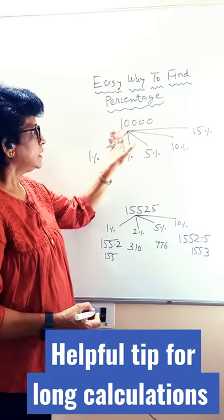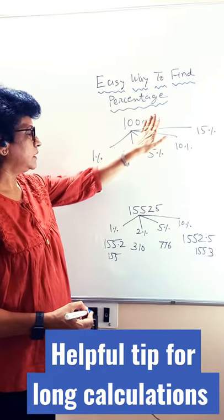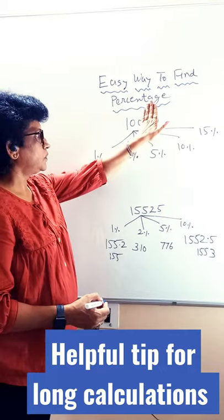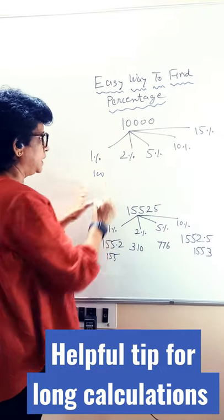Easy way to find percentage. Suppose 10,000 is the figure given to you. To find 1%, you have to hide 2 digits. You are going to get 100.